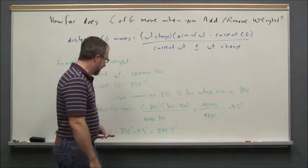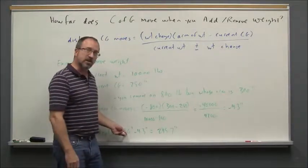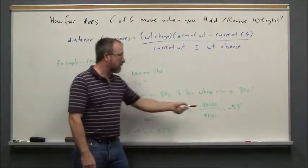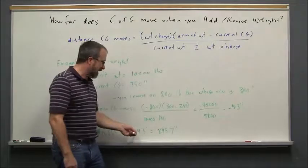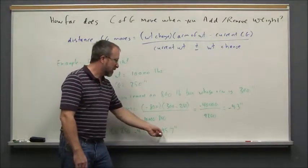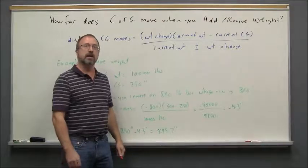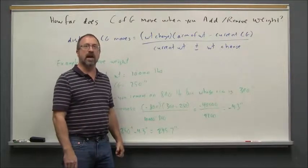To find the new center of gravity you take the existing center of gravity of 250 inches, we calculated the minus 4.3 inches, so we subtract 4.3 inches from that, giving us a new center of gravity of 245.7 inches. In another video we'll look at what happens when you add weight.